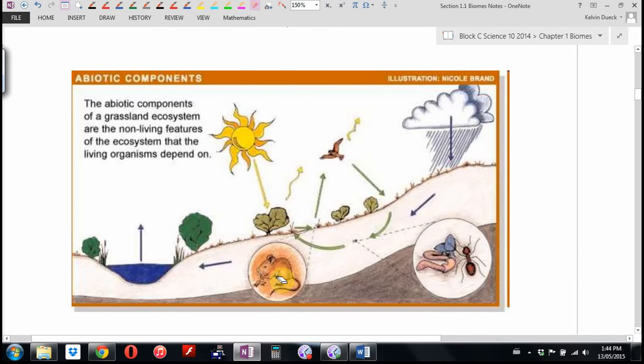These are the biotic aspects. So birds, worms, insects, fungus, little mice, plants. And they all come together and form a biome.